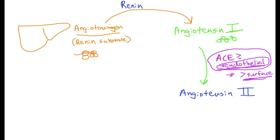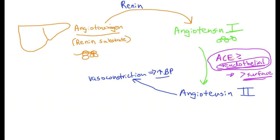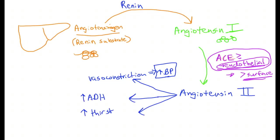Angiotensin 2 is an active hormone in its own right and has several different actions in the body. One is that it directly causes vasoconstriction — it's a relatively weak vasoconstrictor, but it does cause vasoconstriction and actively causes an increase in blood pressure, though this effect is not as strong as direct sympathetic stimulation of smooth muscles in arterioles. The other two major effects are to increase secretion of antidiuretic hormone, causing increased water reabsorption in the collecting ducts, and to increase thirst, so we drink more.